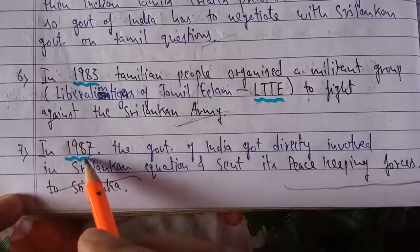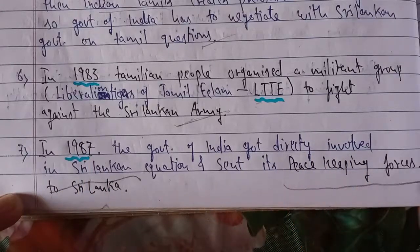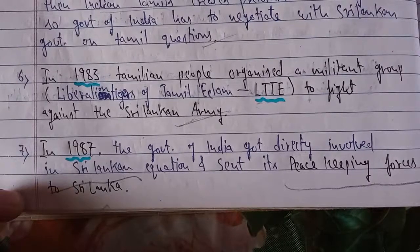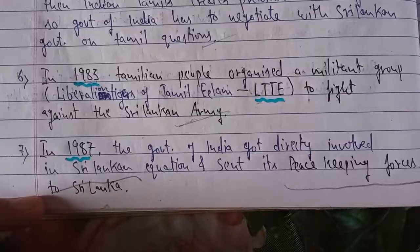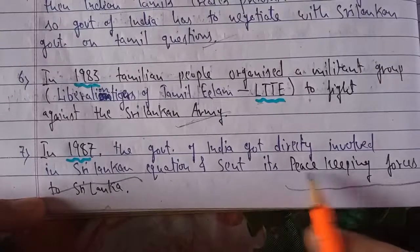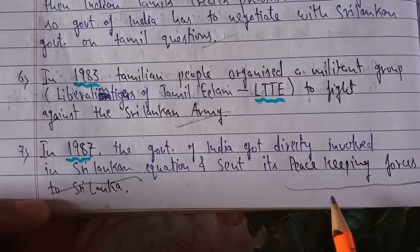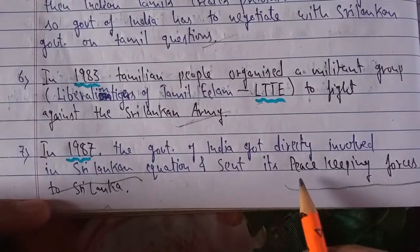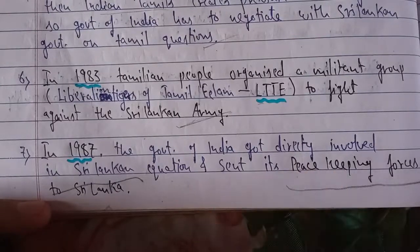In 1987, the government of India got directly involved in the Sri Lankan equation and sent its peacekeeping forces to Sri Lanka. Whenever incidents took place against Tamils, the Indian government was forced by Indian Tamils to negotiate. Finally, India signed an accord with the Sri Lankan government and in 1987 sent its peacekeeping forces — not to fight but to maintain peace and find a solution to stabilize the situation between the Sinhalas and Tamils.